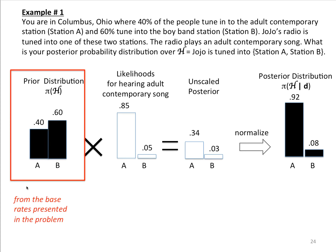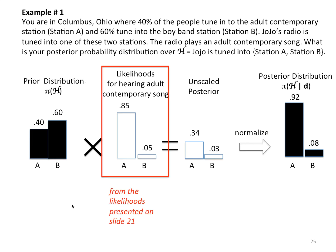First, where did the priors come from? They come straight from the base rates presented in the problem itself. Next, where do the likelihoods come from? They come from the likelihood tables presented on slide 21. Remember, station A is adult contemporary, so it's going to play 85% adult contemporary songs. Station B is the boy band station — it'll play only 5% adult contemporary songs. So those are your two likelihoods.